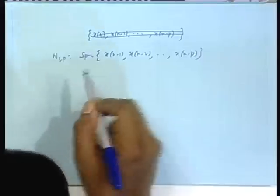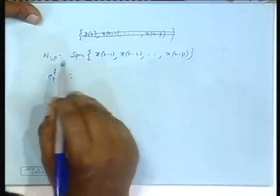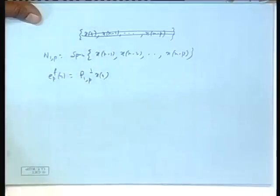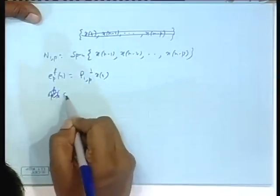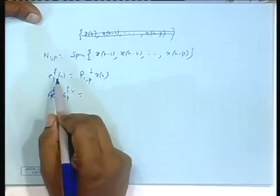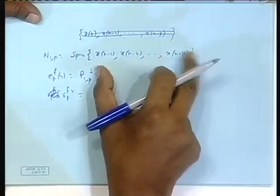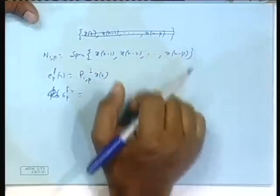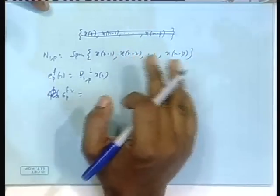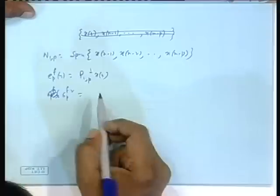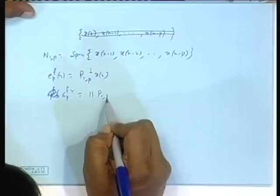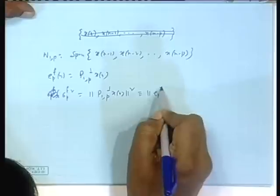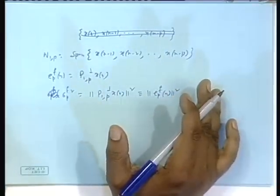Very quickly, we had these definitions. E_p_f_n was the projection of x_n on the space spanned by this, and taking the error. The variance sigma_p_f_squared goes to the norm square of this quantity — norm square means variance, expected value of the mod square, because that is our definition of inner product.